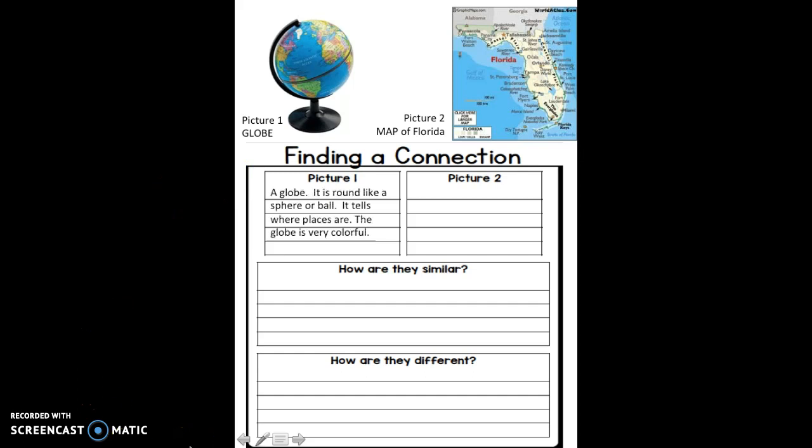So let's look at picture one, the globe. Well, the globe is round like a sphere or ball. It tells where places are, and the globe is very colorful. Let's take a look over here at picture two of our maps. Maps are flat.